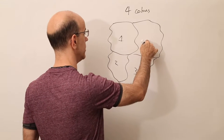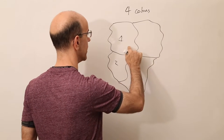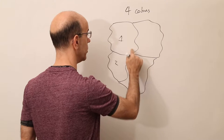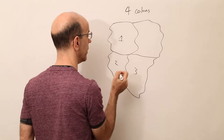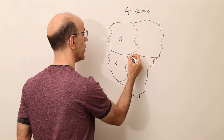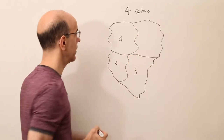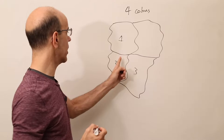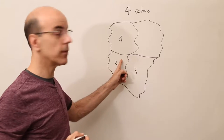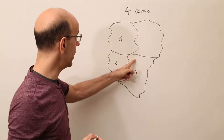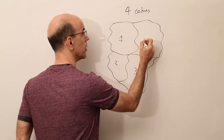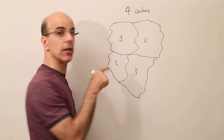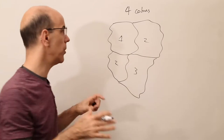This one can be two because it doesn't share a border with two — it shares with one and three, so I can reuse two over here. So in this particular case, I only needed three colors. But what they found was that in general, whether you're doing a map of the world, of countries, cities, or counties, it didn't really matter — four was the limit.